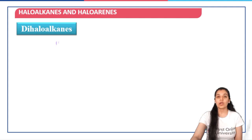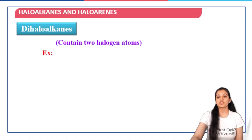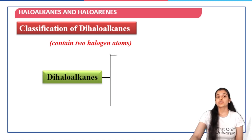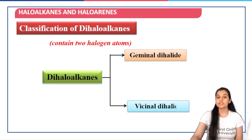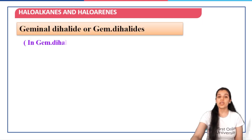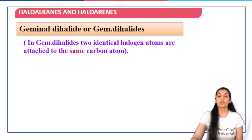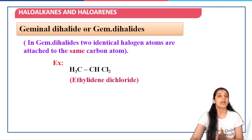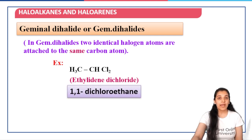Let us discuss dihalo alkanes. Di means two, so when we have two halogen atoms — for example CH2Cl2, which is dichloromethane — dihalo alkanes can be further classified into geminal and vicinal dihalides. Geminal, or gem dihalides, are those in which the two identical halogen atoms are attached to the same carbon atom. For example, CH3CHCl2 — where the two Cl atoms are on the same carbon — is a geminal dihalo alkane, with the common name ethylidene dichloride and the IUPAC name 1,1-dichloroethane.